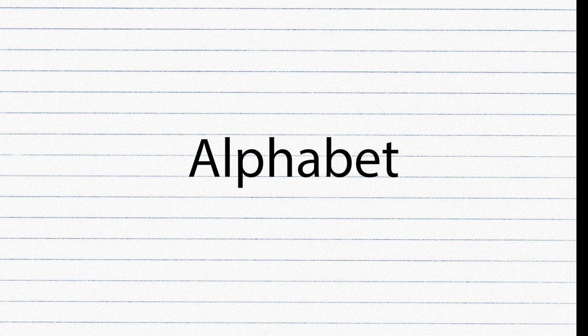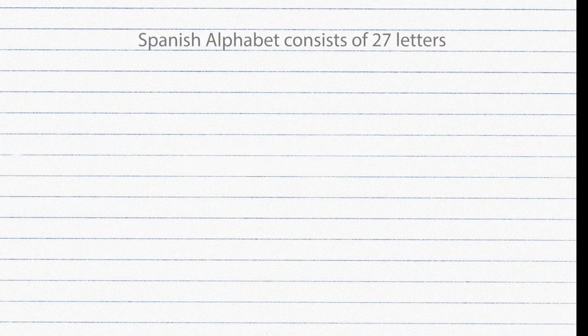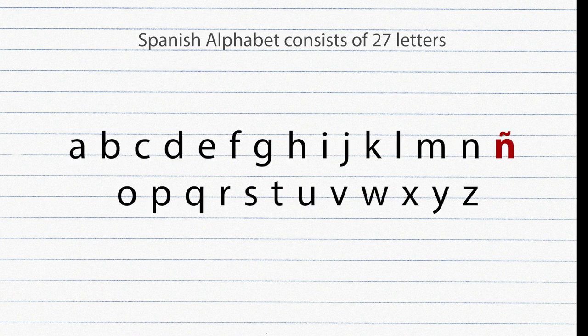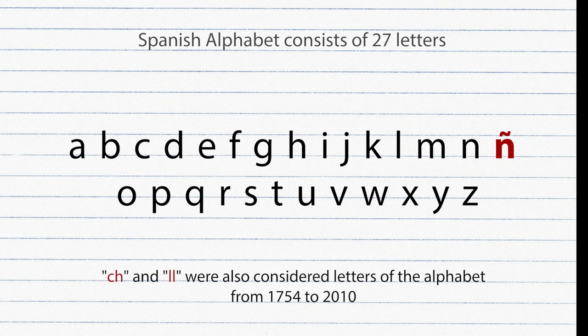Spanish Alphabet. The Spanish alphabet consists of 27 letters and they are quite easy to learn since most of the letters are similar to the English alphabet, all except one letter. Let's take a look at some Spanish letters with unique pronunciations.